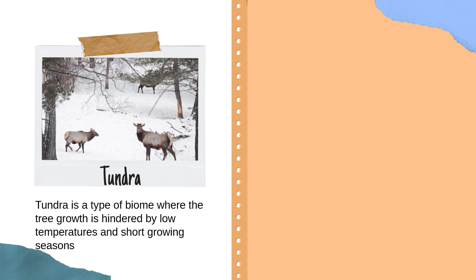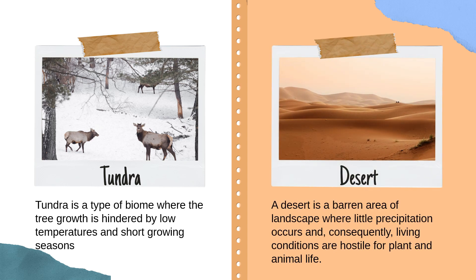Next is tundra. Tundra is the ecosystem which has very low temperature, where the growth of vegetation is hindered by the low temperatures and they have a short growing season. Then desert — it is a barren area of the landscape where there are very poor conditions for plant and animal life.